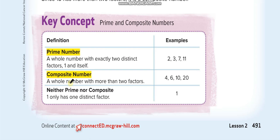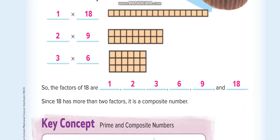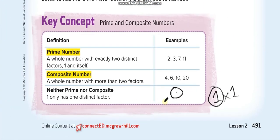What about the number one? The number one is neither prime nor composite. Why? Because one only has one distinct factor: one times one, so there is only one factor — one itself. Prime numbers always have exactly two factors, like five has factors one and five. So one doesn't fit the category of prime, and it is also not composite.